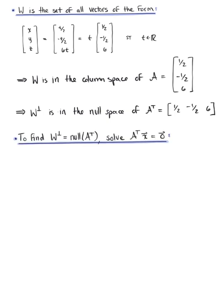Now to find the orthogonal complement of subspace W, or in other words, the null space of A transpose, we need to solve the matrix equation defined as A transpose times vector x being equal to the zero vector. In other words, we need to row reduce A transpose augmented with the zero vector to row reduced echelon form.